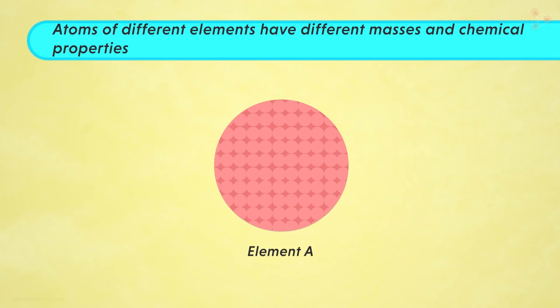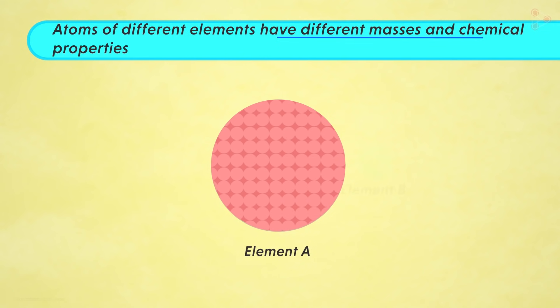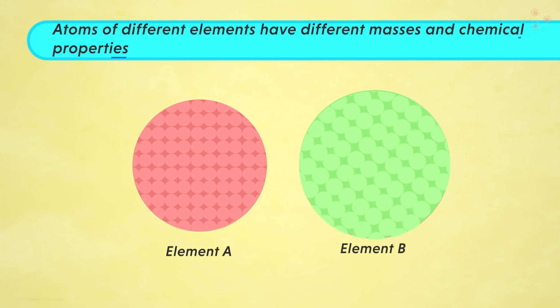And does this explain the fourth postulate too? Yes! The fourth postulate states that atoms of different elements have different masses and chemical properties. So are we able to notice that atoms in element A are different from those in element B? Absolutely! And in what sense are they different? Atoms in element A and B have different masses and even different chemical properties. In simple words, it states that atoms of different elements are different.